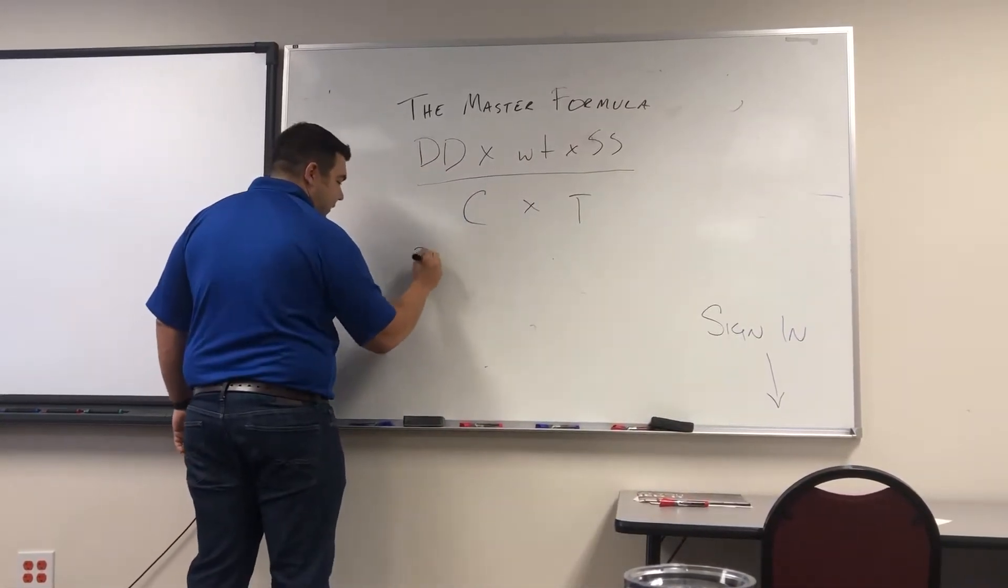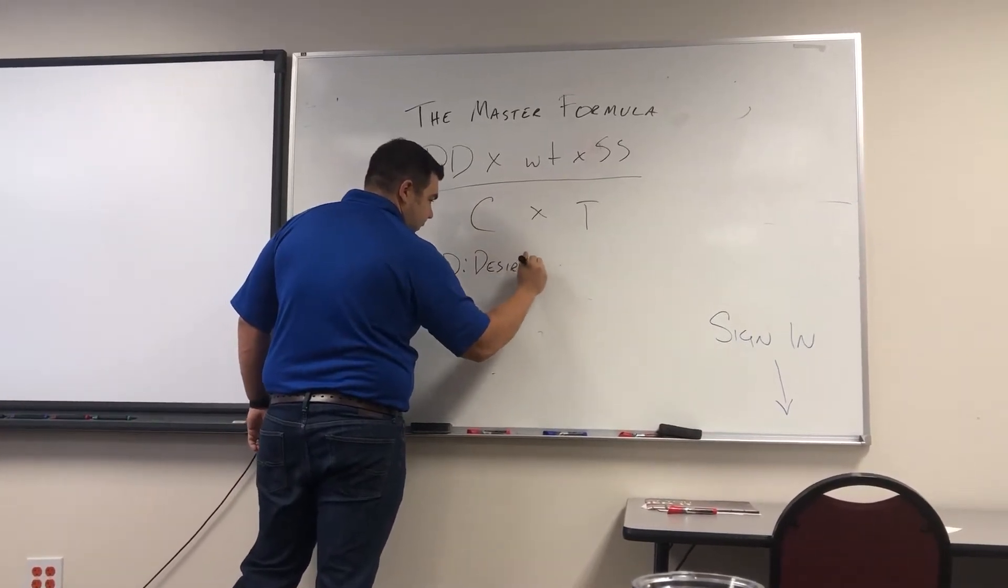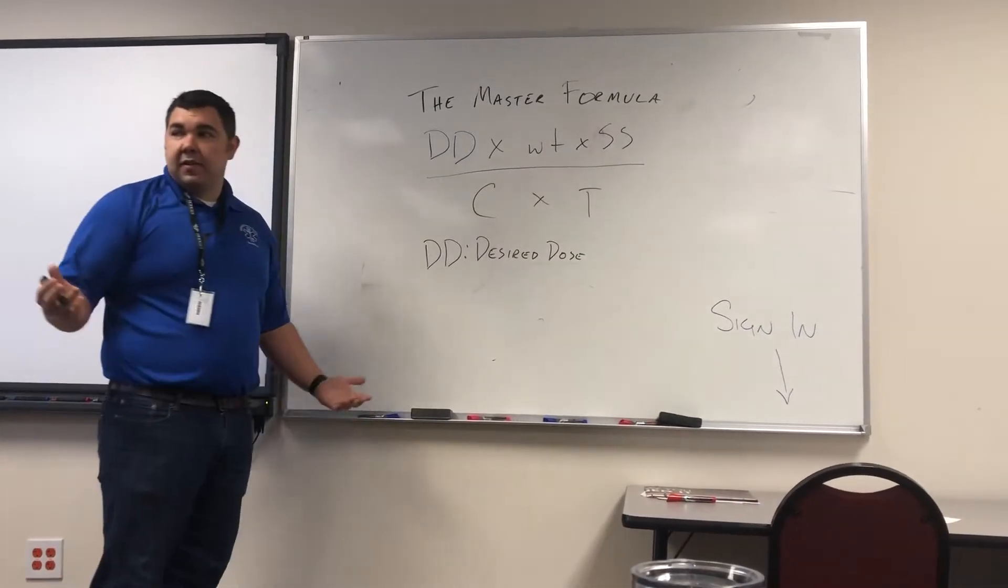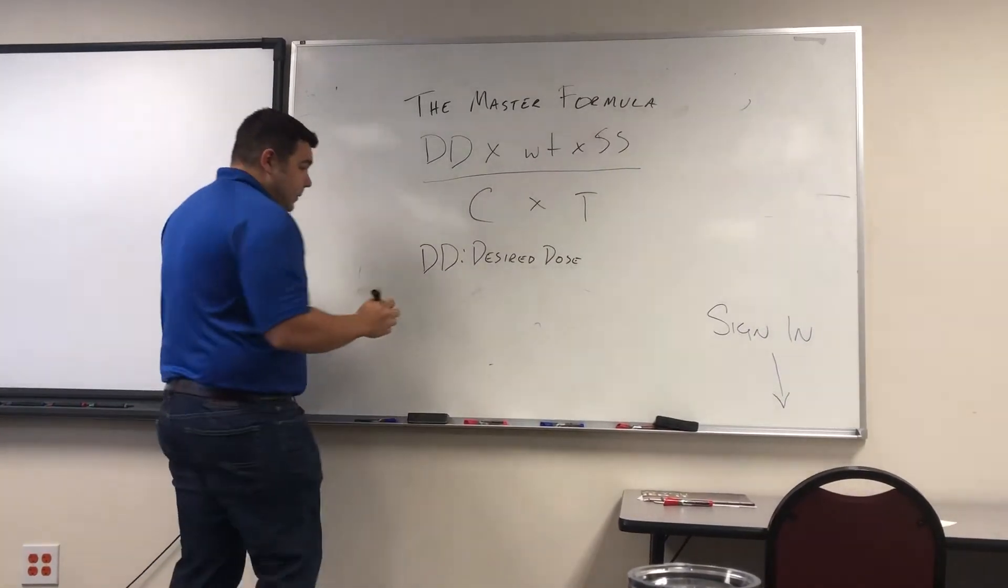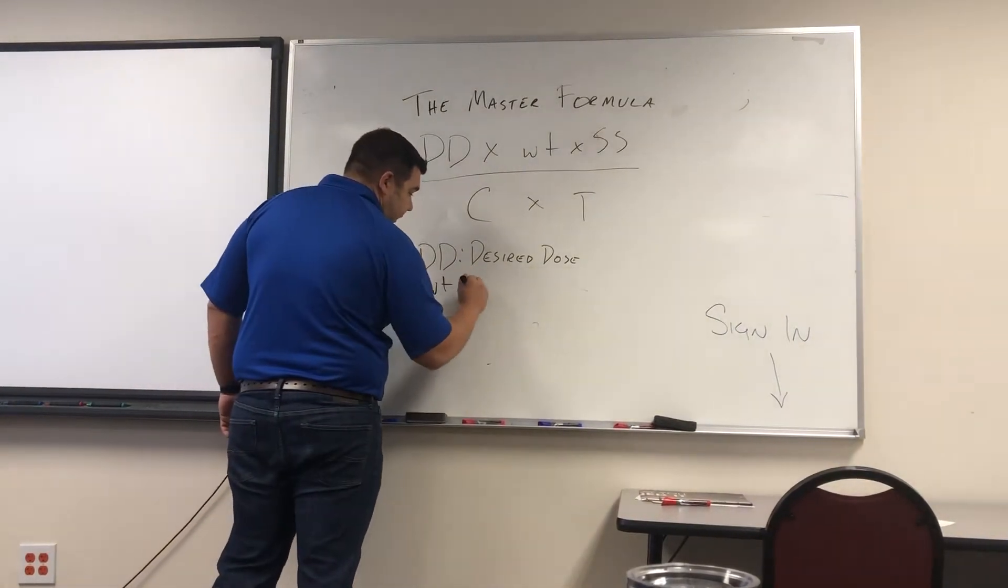What's DD? Desired dose. That's your desired dose, exactly. That's going to be your ordered dosage, whatever's in your protocol. What's WT? Weight in kilograms. Weight in kilograms, very good.